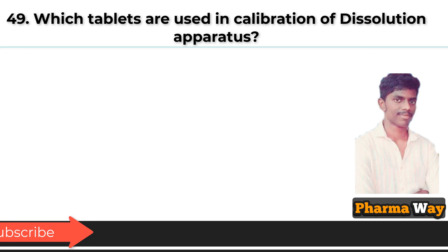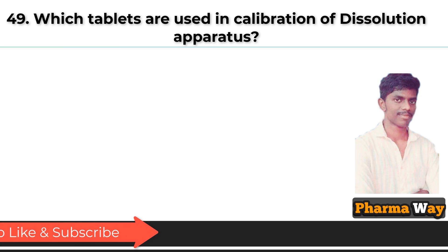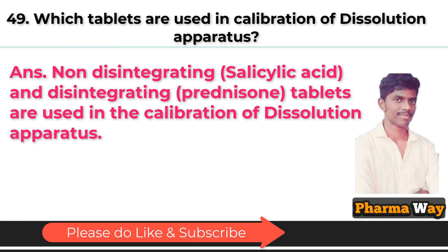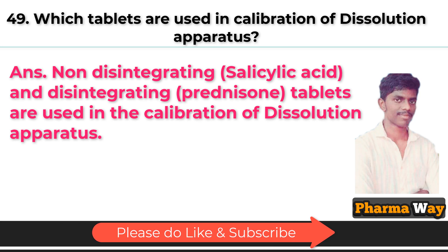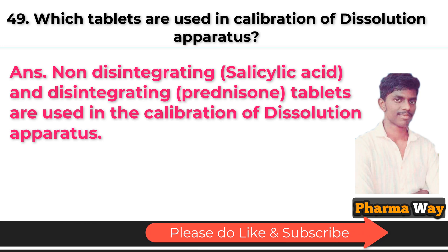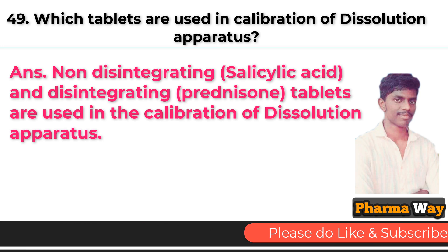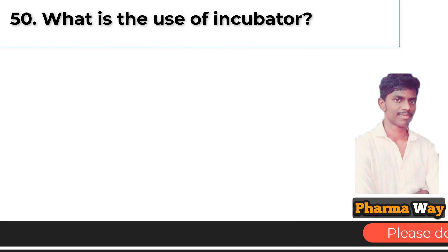Which tablets are used in calibration of dissolution apparatus? Answer: Non-disintegrating tablets are salicylic acid tablets and disintegrating tablets are prednisone tablets, used in the calibration of dissolution apparatus.